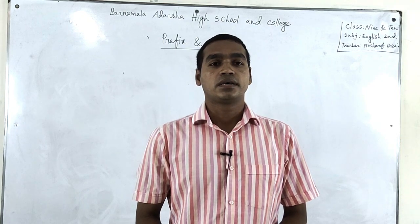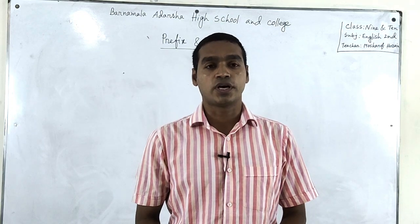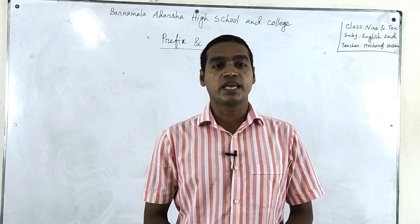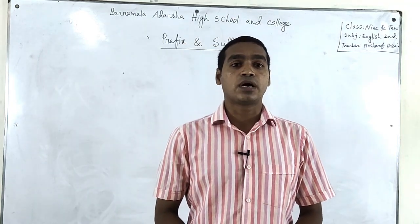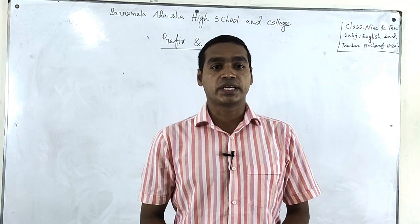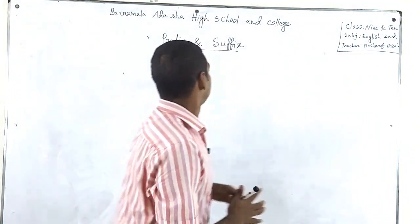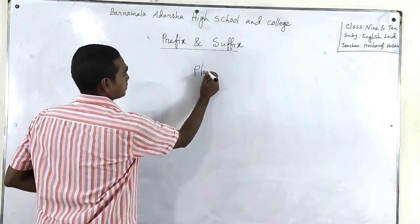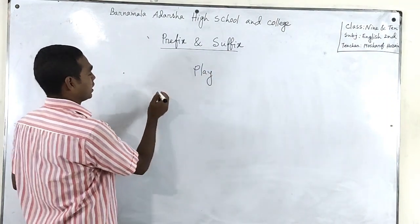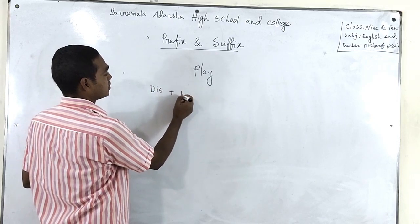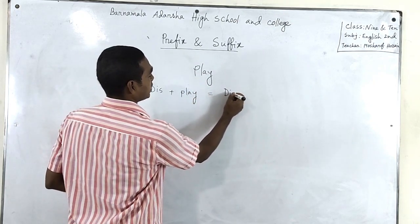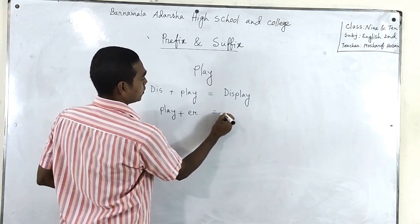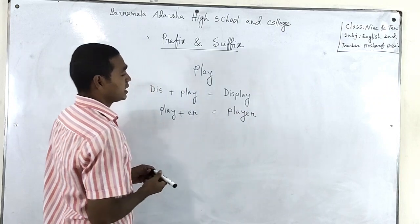This is not merely a sentence — if your instructor has read the back, adjective theke noun, verb theke noun — ei rupantar ta suffix prefix. Let's go. Look — play, play actor, word — player. Ami kichu barna jog korbo, jog kora holo — this jog kore ki hoe gelo — display.